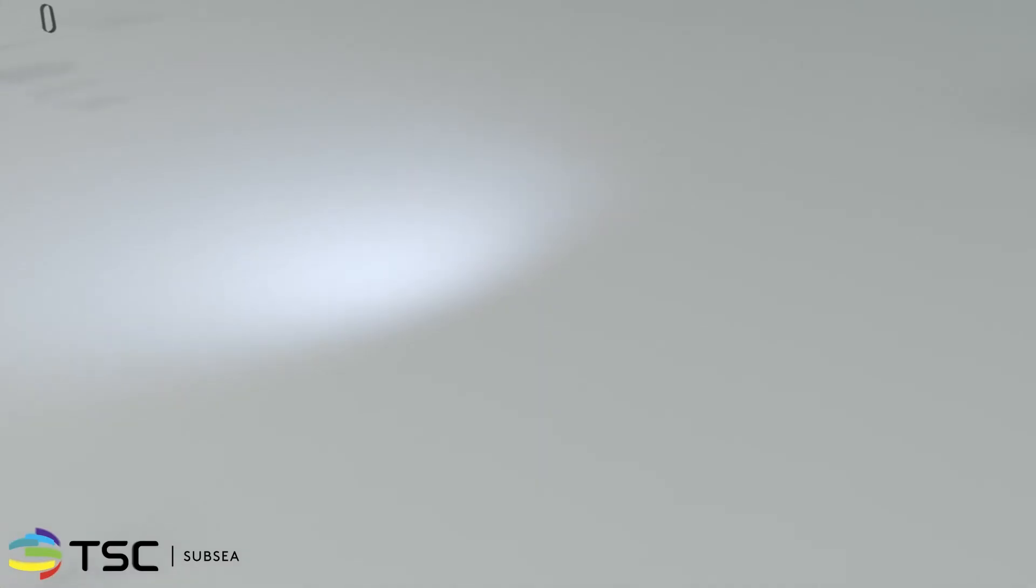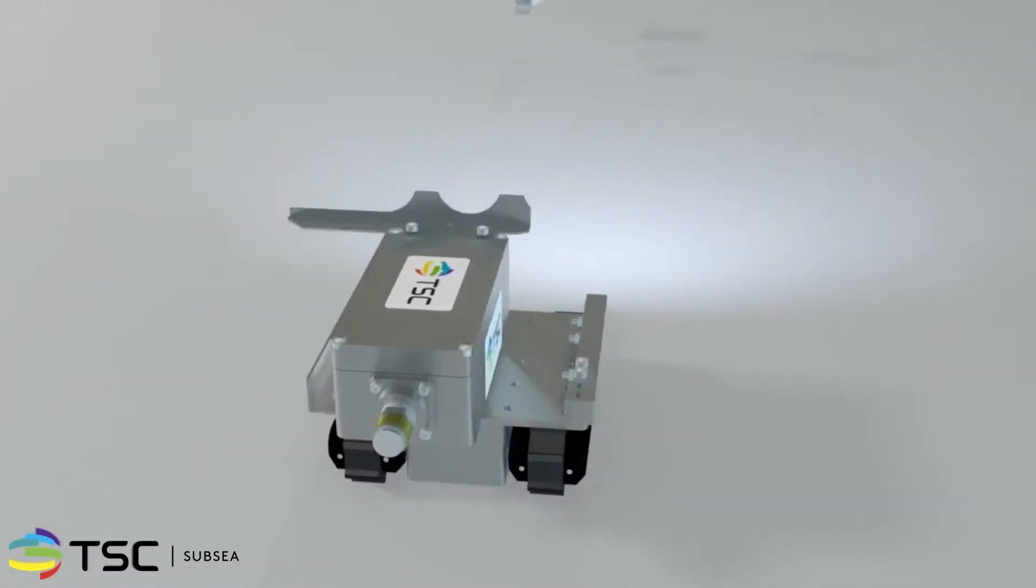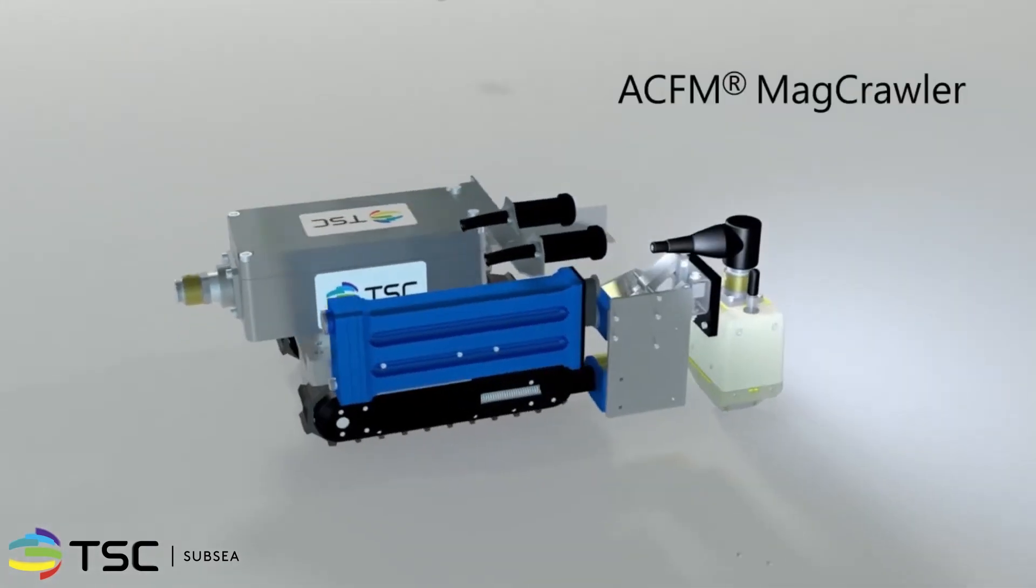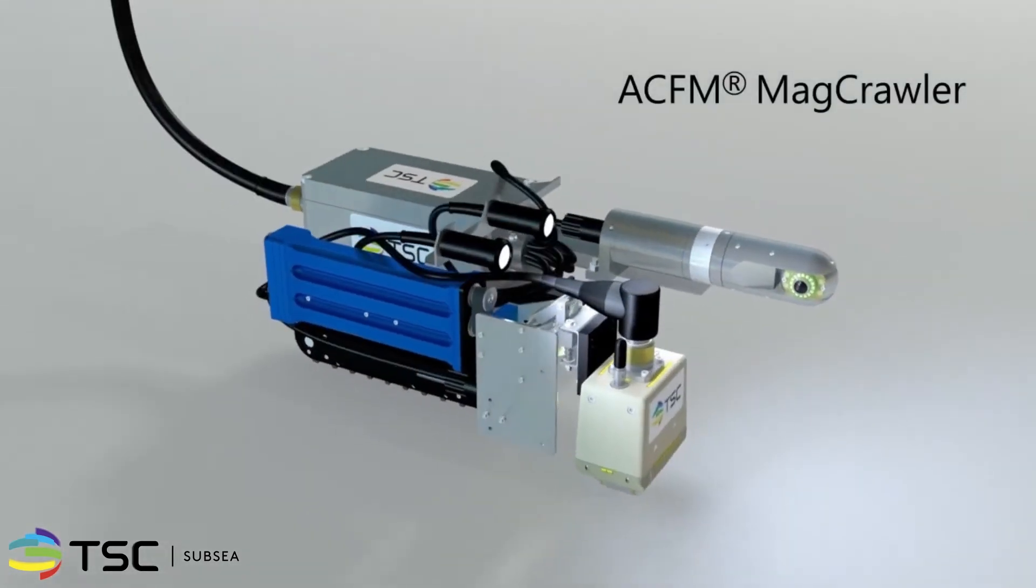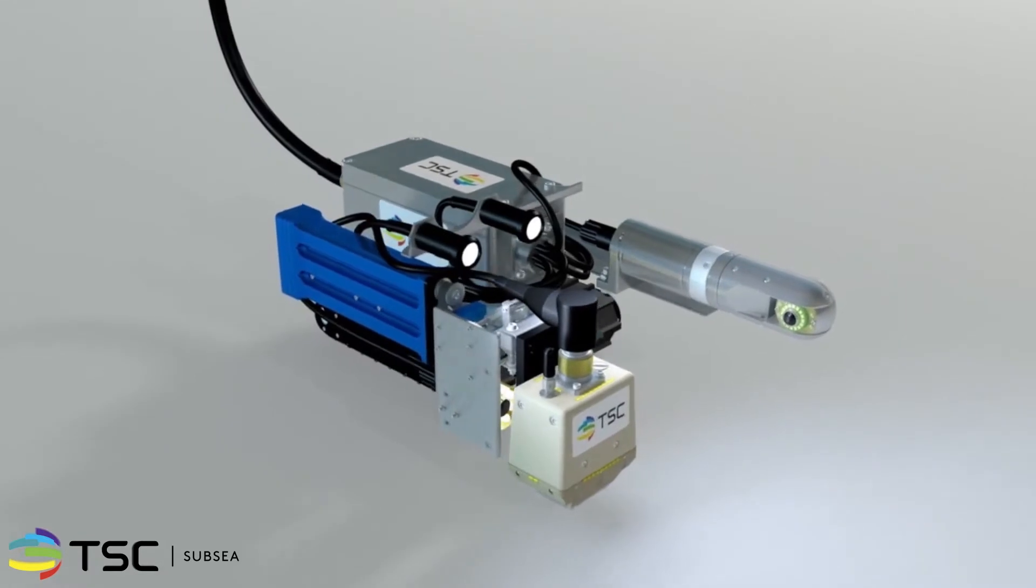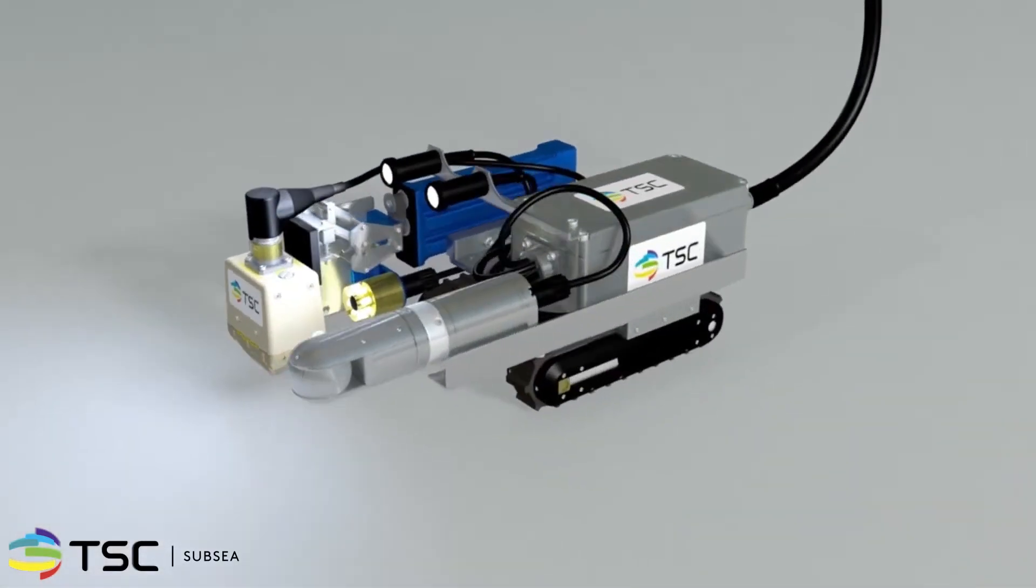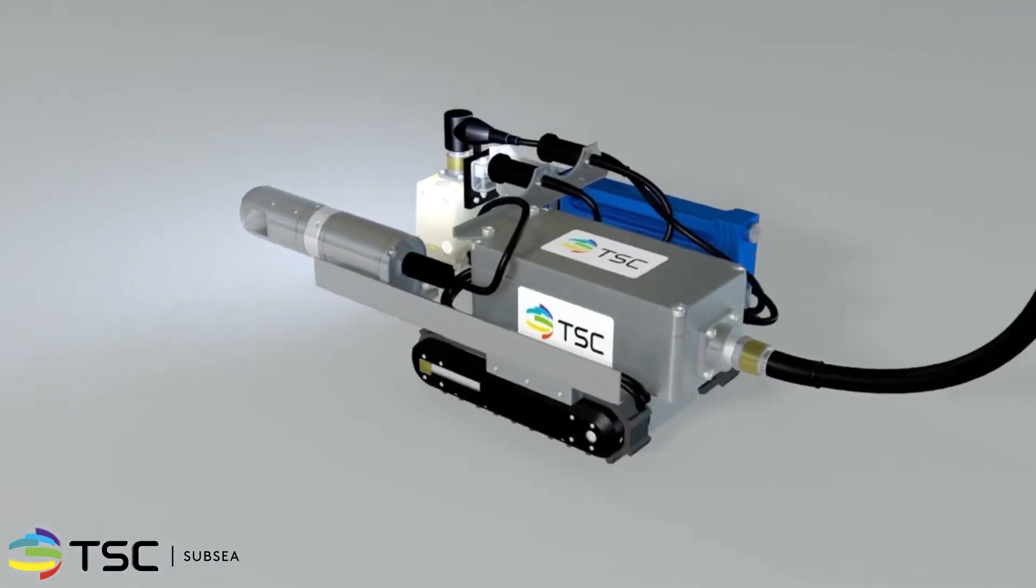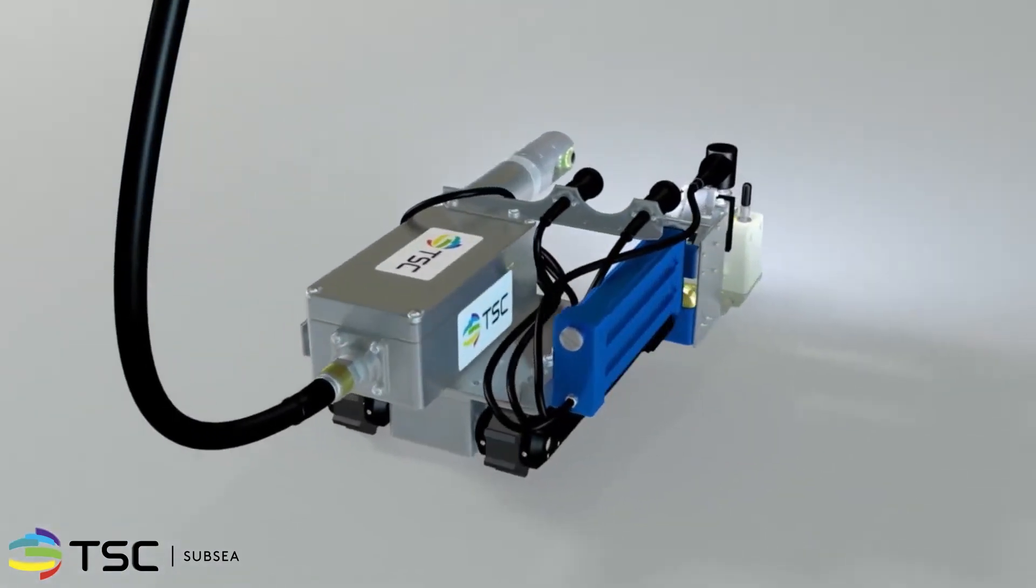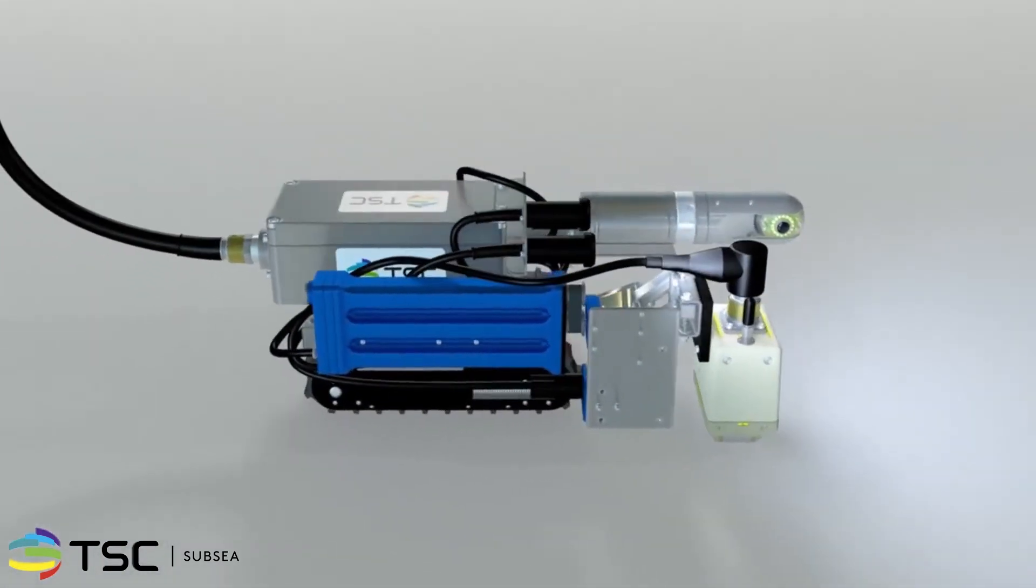In challenging environments where weld geometry is simple, i.e. circumferential or linear, the TSE ACFM Magcrawler can be deployed for rapid and reliable inspection results. Operable at depths of up to 150 meters, as well as in the splash zone and topside, the Magcrawler gives any inspection campaign a rugged, flexible solution.